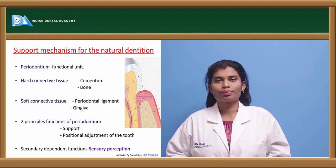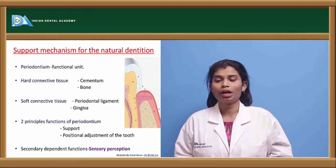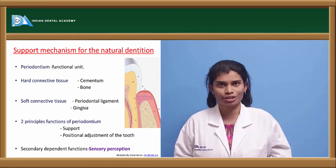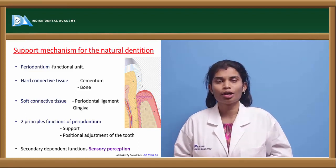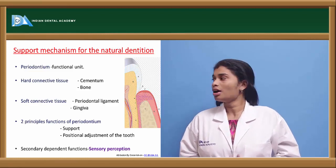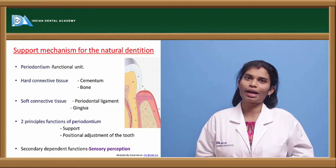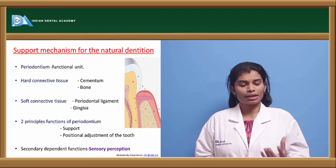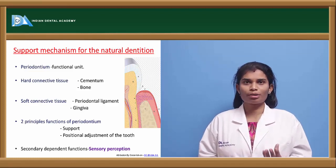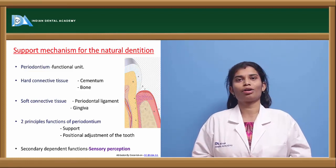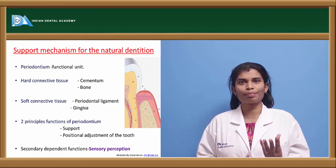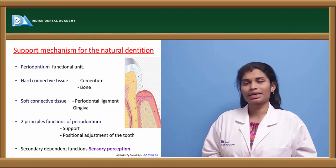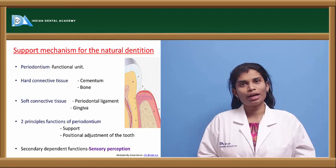Before understanding the major mechanics of denture working — support, stability, and retention — you need to see the difference between the support mechanism of natural and artificial teeth. The support mechanism of natural teeth is constituted by the periodontium, a functional unit with two components: bony components (cementum and bone) and soft tissue components (periodontal ligament and gingiva). These together help in two principal functions: support and positional adjustment of the teeth. The ligament's flexibility and compressive capacity leads to positional adjustment under axial forces. The secondary dependent function is sensory perception.